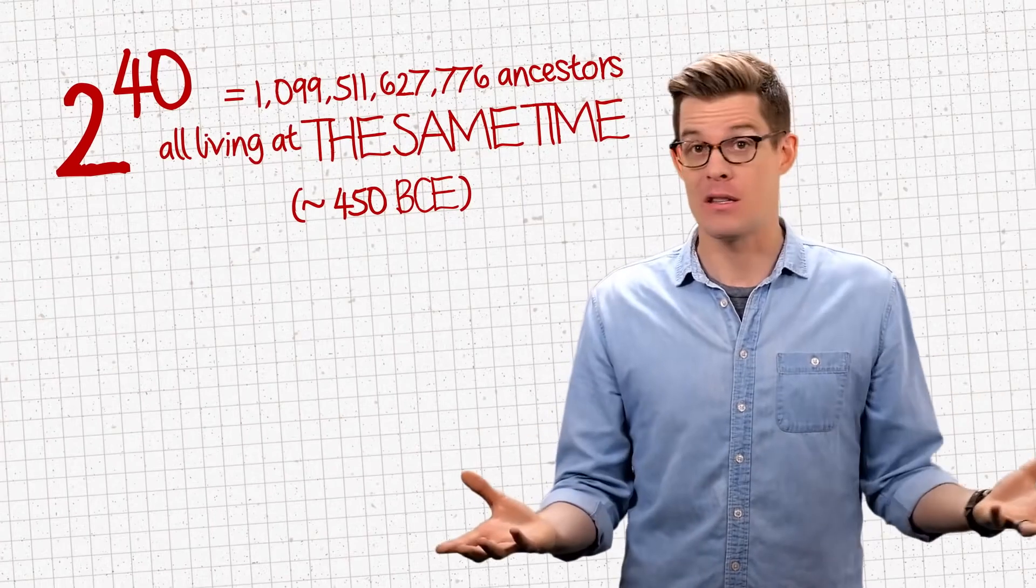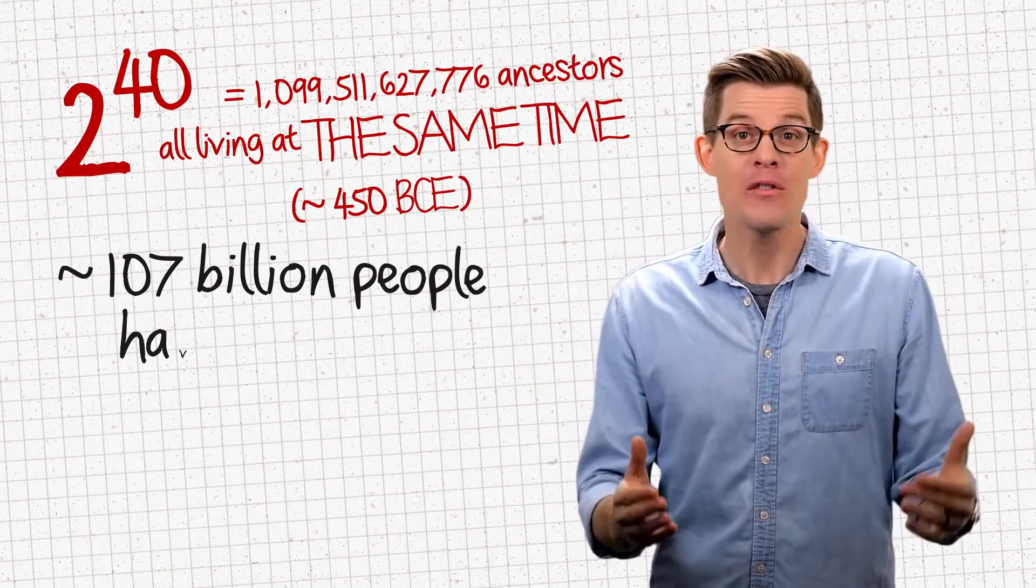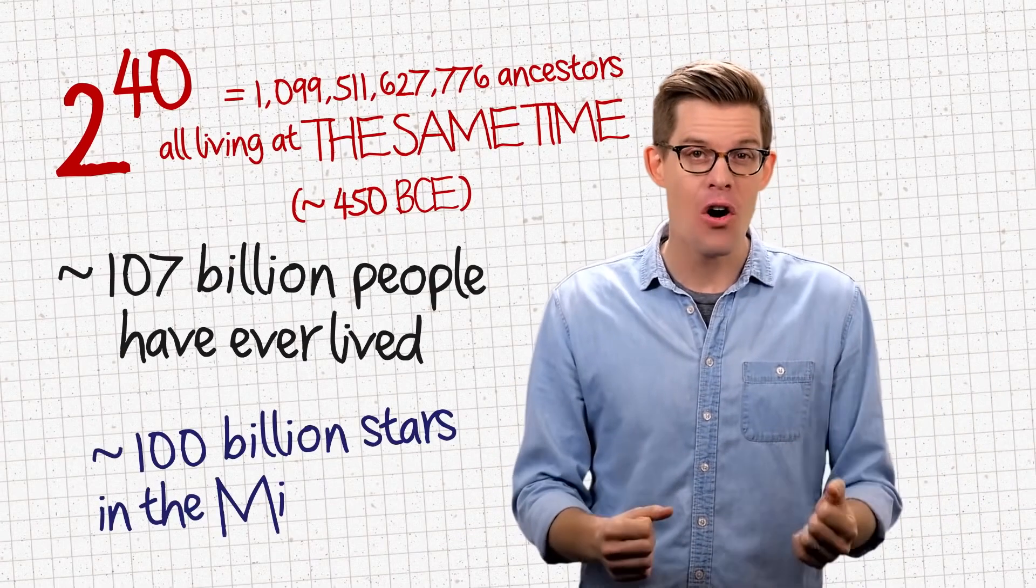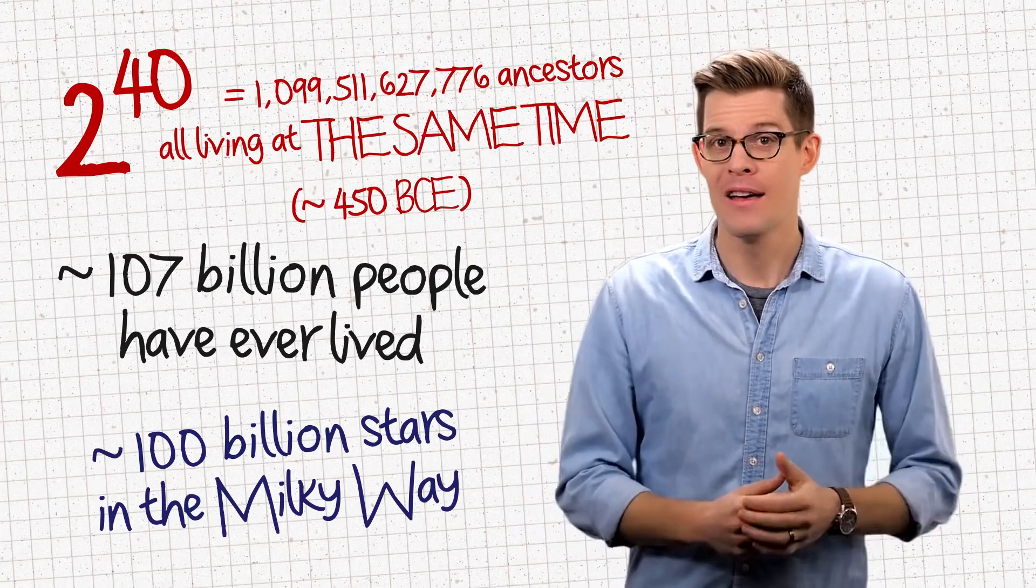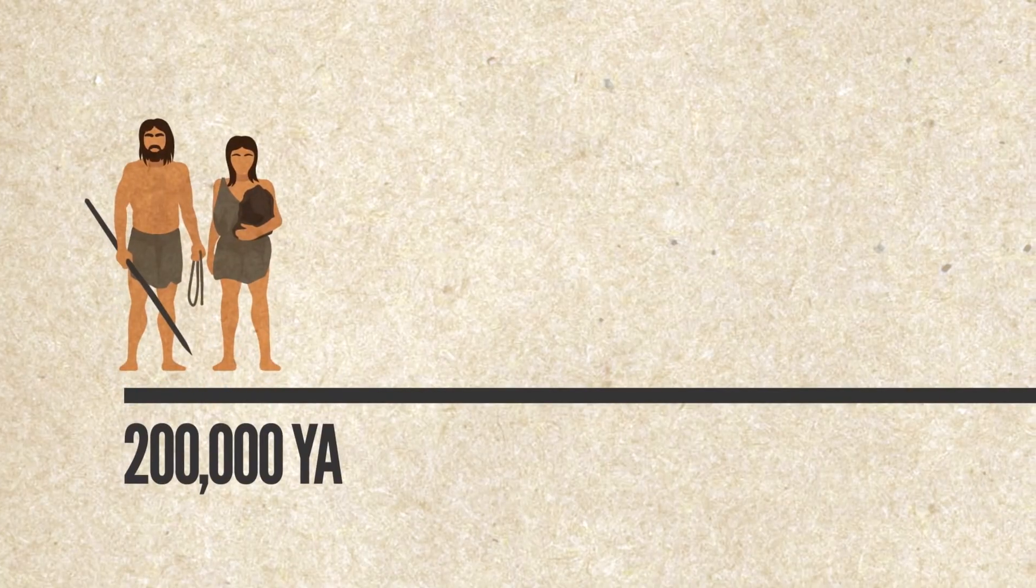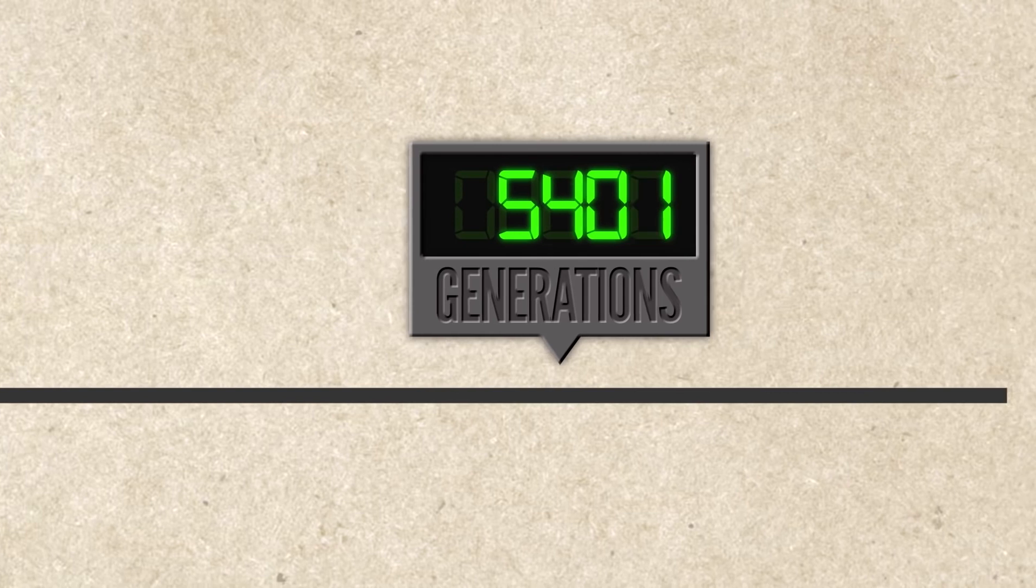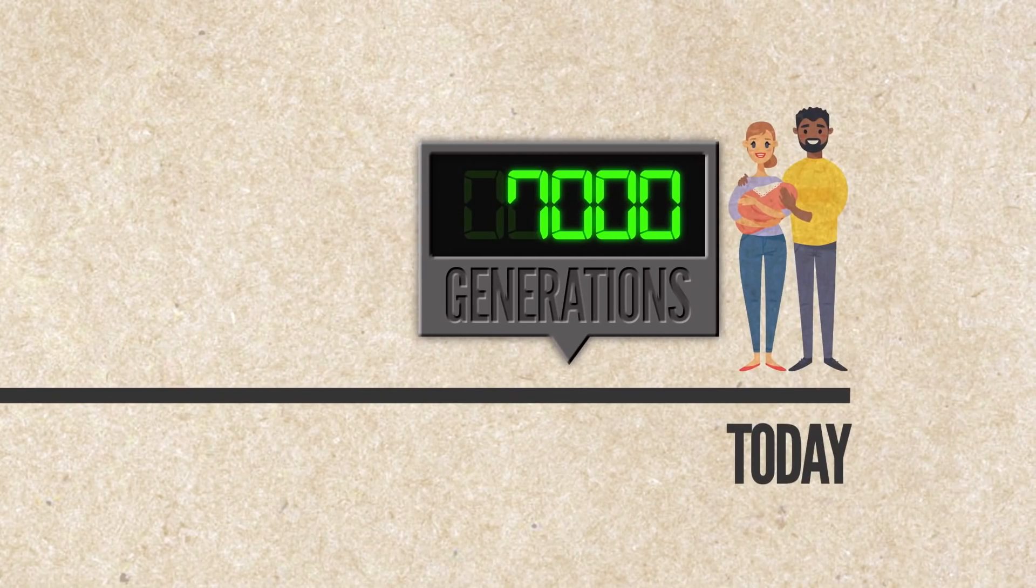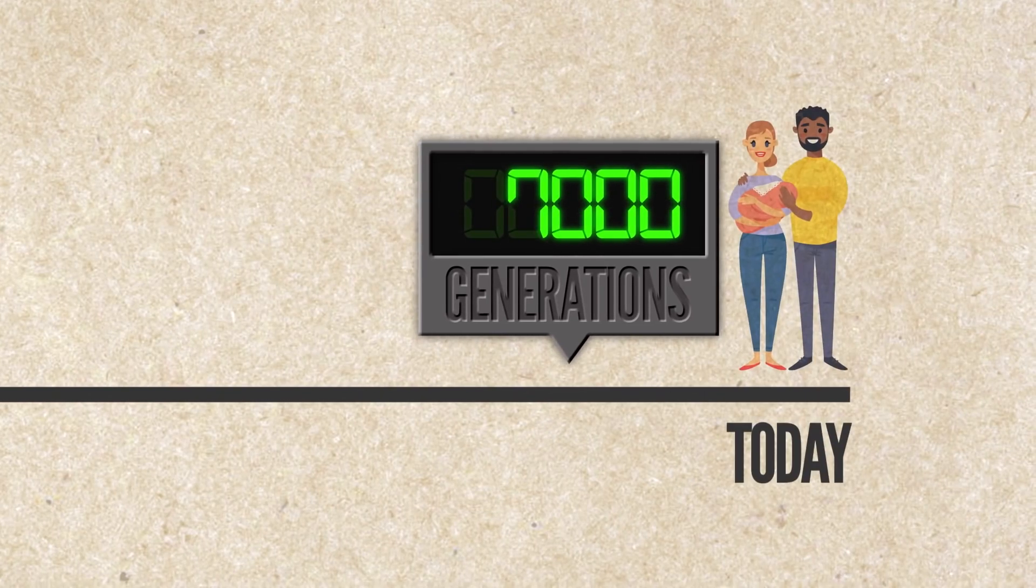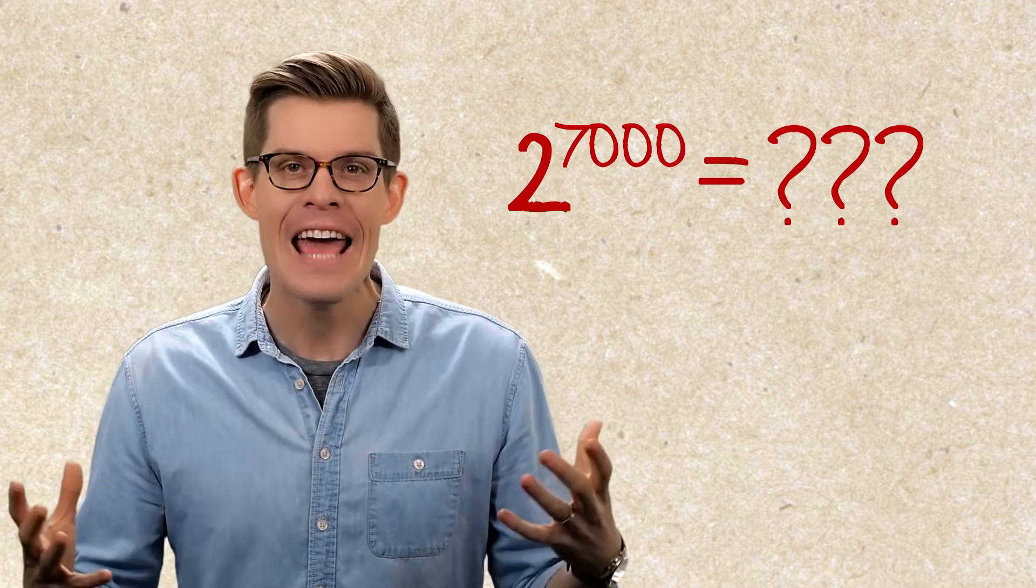Which is ridiculous. That's not only more people than have ever been alive, it's more stars than are in the Milky Way. Since our species came on the scene 200,000 years ago, there have been maybe 7,000 or 8,000 generations of humans leading up to you. So where are all your missing ancestors?